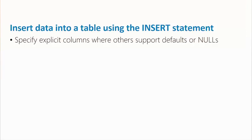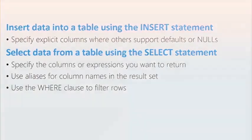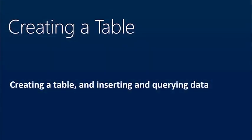Some key points we've covered: we INSERT data into a table using the INSERT statement, and when we do that we can either specify explicit columns or support defaults and nulls. We SELECT data from a table using the SELECT statement, specifying the columns or expressions. We can use aliases — alternative names for columns in the result set — using the AS clause. And we can filter rows using the WHERE clause to bring back only rows that satisfy that filter criteria.